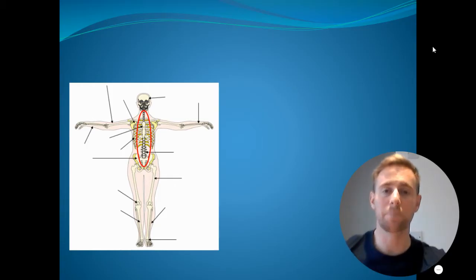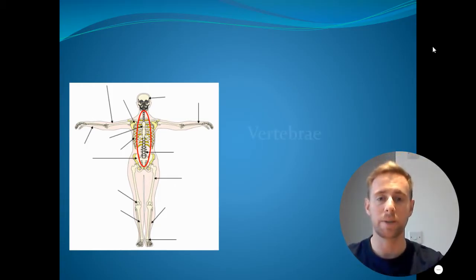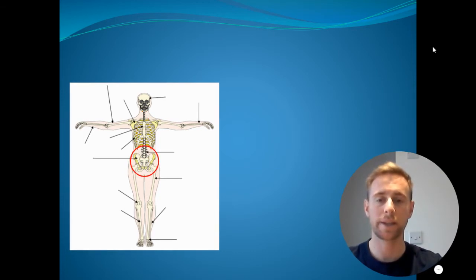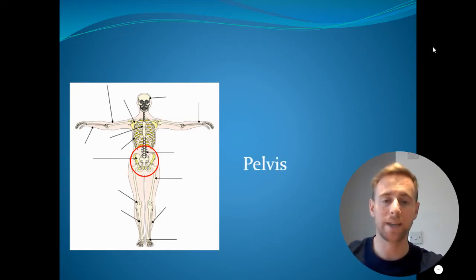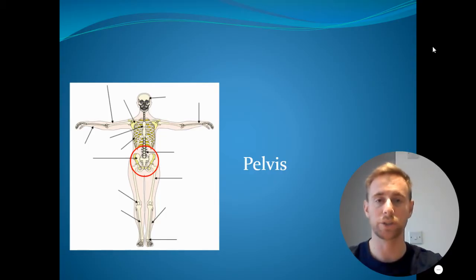This is then focused on our back, so our spine, and the name we need to know it by in GCSE PE is the vertebrae. The next bone you need to know is our pelvis. This is around our waist and it protects our reproductive organs.